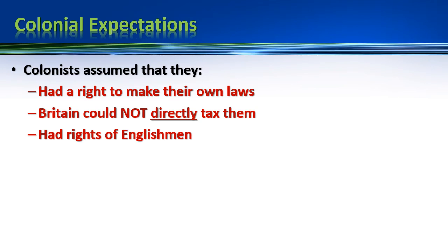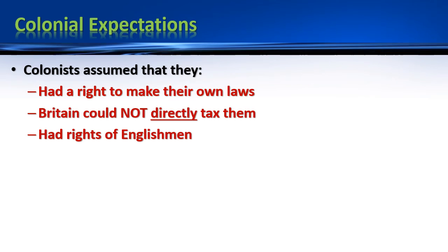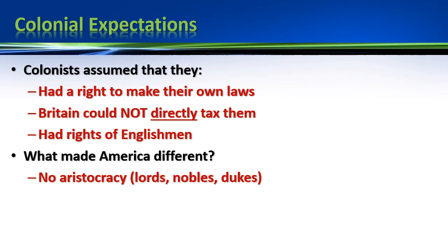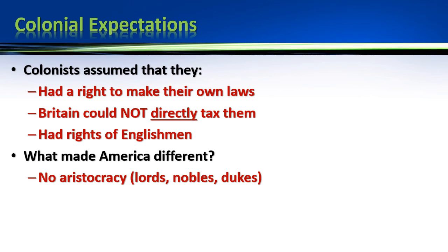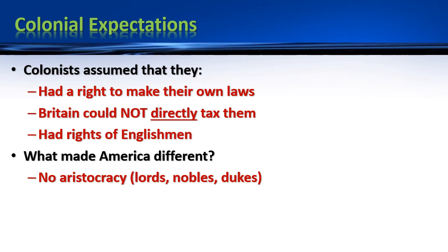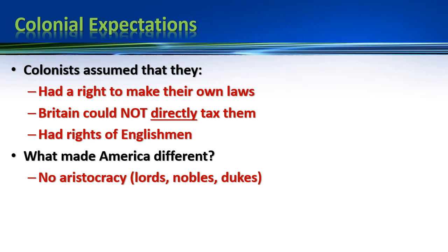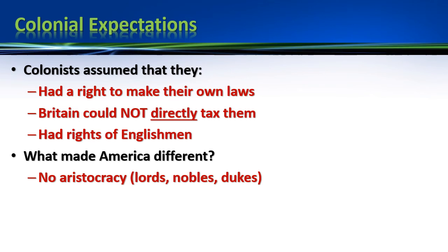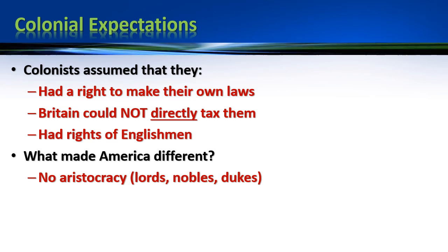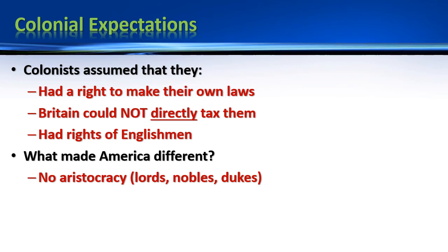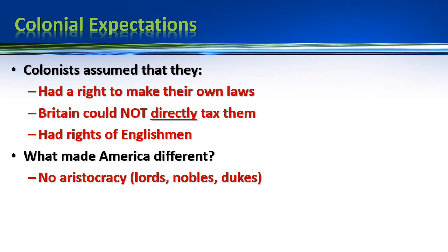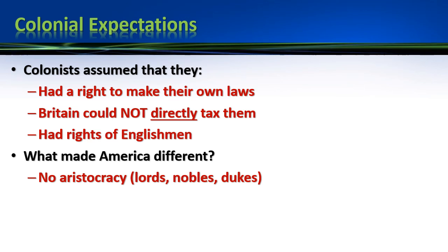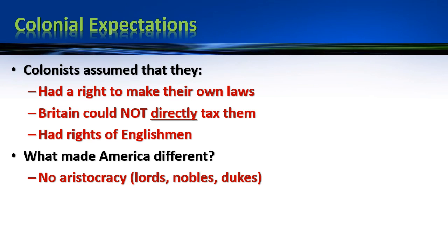Third, and really critical: the rights of Englishmen were not taken away simply because the colonists lived in America and not England. This made America pretty different from England. One key difference is that America really doesn't have an aristocracy. Yes, it has wealthy people, powerful people, and people with titles from England — 'Sir so-and-so' — but really no lords, no nobles, no dukes, no one with a thousand-acre estate and a giant castle. There are wealthy people with big homes and lots of enslaved folks working them, but no aristocracy like you see in England — no Duke of Cornwall, no Viscount of Virginia.